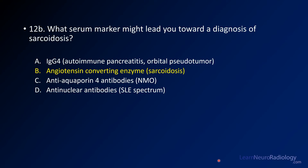Your second question was what serum marker leads you towards a diagnosis of sarcoidosis. We already mentioned that — it's the angiotensin converting enzyme. IgG4 is associated with orbital pseudotumor or orbital inflammatory disease. Aquaporin antibodies are associated with neuromyelitis optica. Antinuclear antibodies are associated with all of the lupus spectrum disorders.